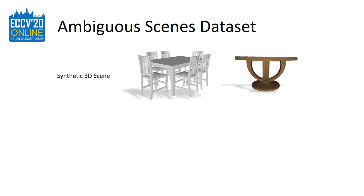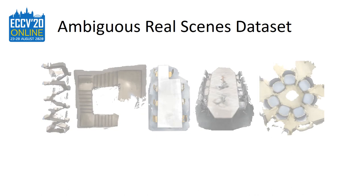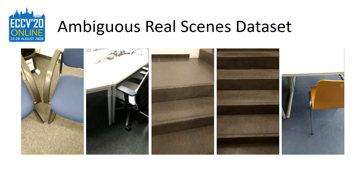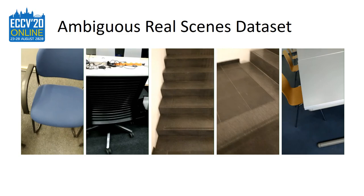For initial evaluation, we create synthetic scenes by rendering 3D models of symmetric objects. Such symmetries introduce ambiguous images at certain viewpoints that we can use to evaluate our method in a controlled environment. For additional evaluation in real scenarios, we create five real scenes of highly ambiguous environments, of which we show the 3D reconstructions here. For each of the five scenes, we capture RGB images as well as ground truth camera poses using a Google Tango device and a graph-based SLAM approach.